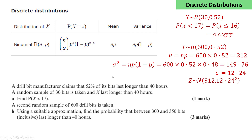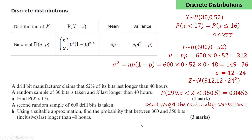So a random variable z with a normal distribution of mean 312 and variance 12.24 squared will be a suitable approximation. We're asked to use this to find the probability that between 300 and 350 bits last longer than 40 hours. Don't forget: as z is a continuous distribution, we have to use a continuity correction. This means we need to calculate the probability that z lies between 299.5 and 350.5, which turns out to be 0.8456.